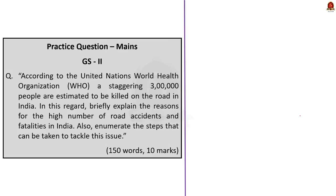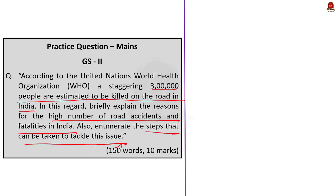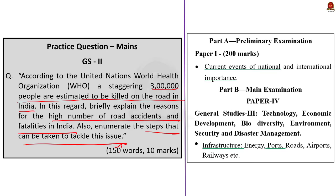The main question can be asked in GS Paper 3 under the syllabus of infrastructure — energy, port, roads, airport, railways, etc. The question reads: According to the WHO, a staggering 3 lakh people are estimated to be killed on roads in India. Briefly explain the reasons for the high number of road accidents and fatalities in India, and enumerate the steps that can be taken to tackle the issue.